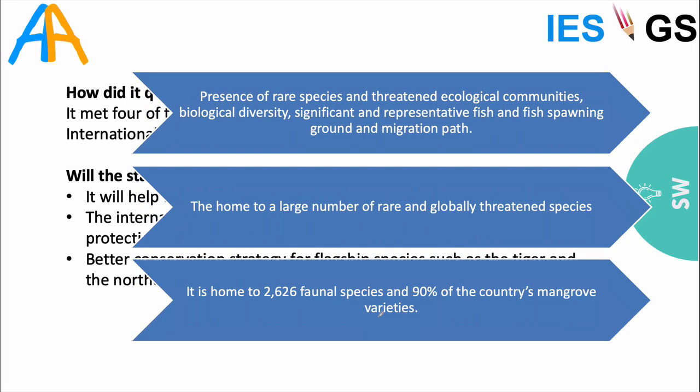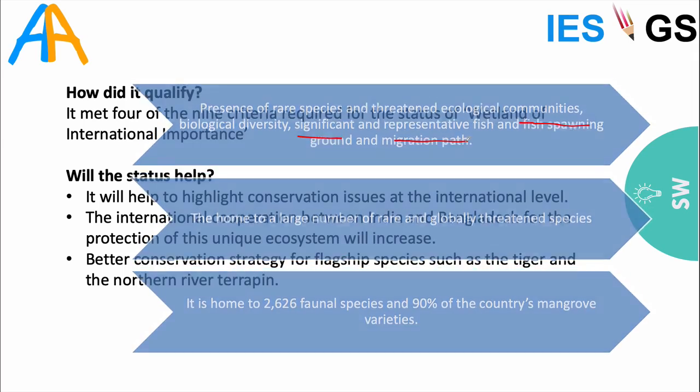The Sundarbans qualifying criteria include: presence of rare and threatened species such as the Royal Bengal Tiger, river terrapin, and crocodiles; significant fish spawning grounds and migratory paths; a place for migratory birds; and being home to a large number of rare and globally threatened species. It hosts almost 2,000 plant species and 90% of the country's mangrove variety.